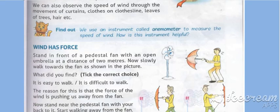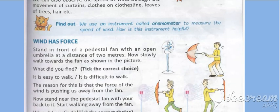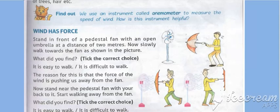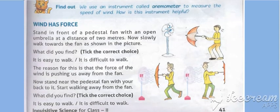Wind has force. Stand in front of a pedestal fan with an open umbrella at a distance of 2 meters. Now slowly walk towards the fan as shown in the picture. What did you find? Is it easy or difficult to walk? The answer is it is difficult to walk. The reason is that the force of the wind is pushing us away from the fan.